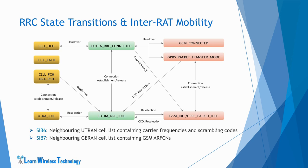Similarly, for performing IRAT reselection to GSM, the UE searches for neighboring GRAN cells or GSM cells and starts measuring the attributes. The UE reads the SIB-7 message to know about the neighboring cell list containing the list of GSM ARFCNs. The UE also reads the SIB-3 message, which contains serving cell reselection parameters, enabling the UE to decide whether it needs to perform IRAT measurements. IRAT measurements can be skipped if the serving cell attributes fulfill certain search and measurement criteria.